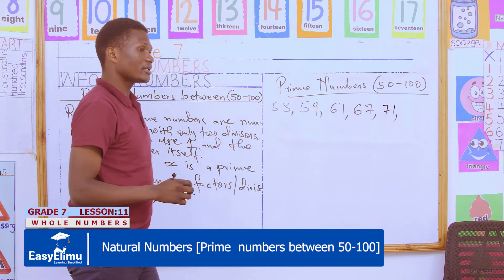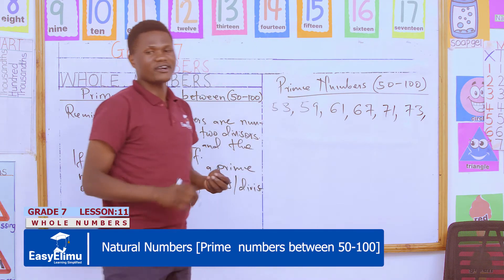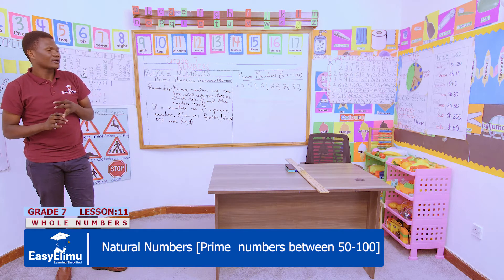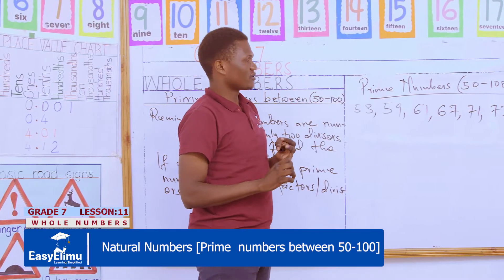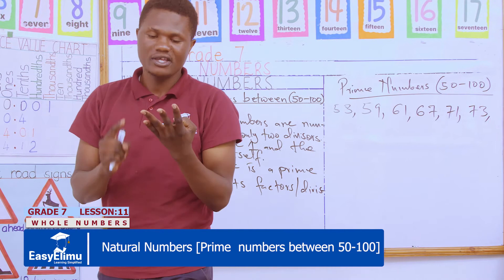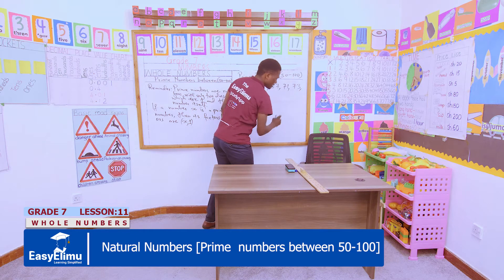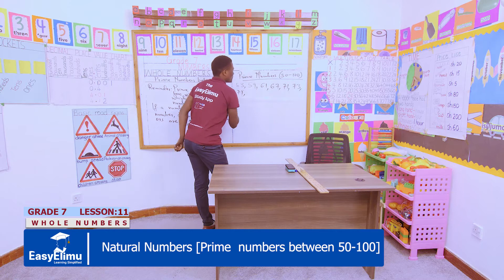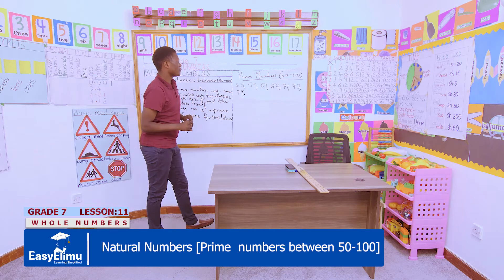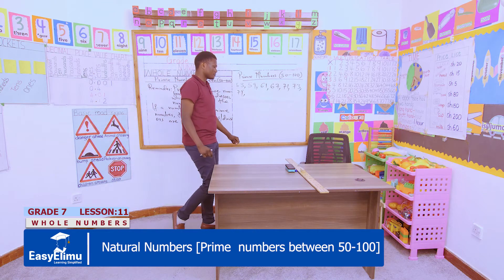After 71 we have 73. After 73, someone is saying 75 — is 75 a prime number? Not really. 75 is not a prime number because it is divisible by 3, by 5, by 1, and by 75 itself. So 75 does not belong here. After 73 we move to 79. Someone says 77 — not really, 77 is divisible by 11, 1 and 77 itself. So from 79, what is the next prime number between 50 to 100?